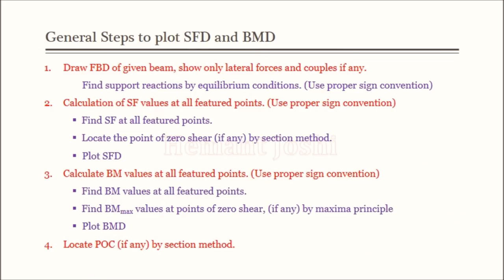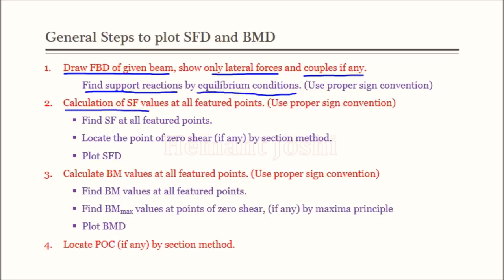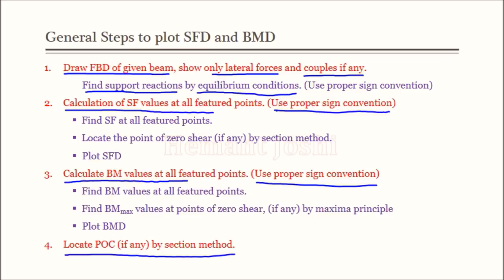Here are the general steps to plot SFD and BMD. Step 1: draw the free body diagram of the given beam and find support reactions using equilibrium conditions. Important note: we are interested only in lateral forces and couples, since these cause shear and bending. Axial forces cause only elongation or contraction and are ignored. Step 2: calculate shear forces using proper sign convention. Step 3: calculate bending moment values at various feature points with proper sign convention. Step 4: locate the point of contraflexure if it exists.